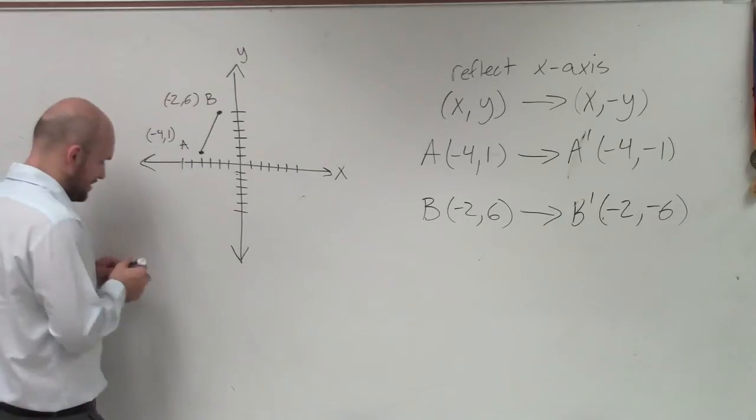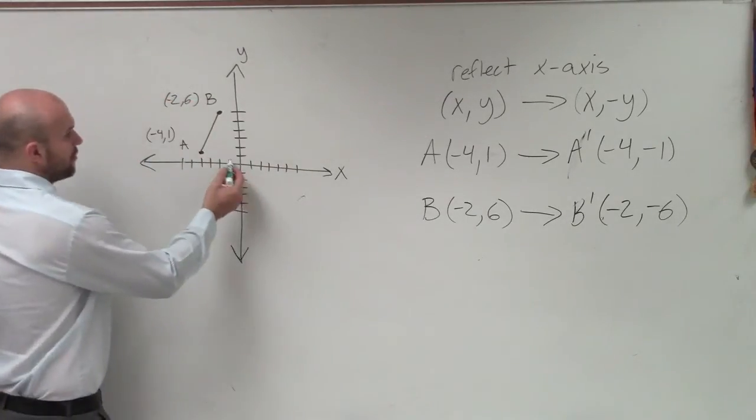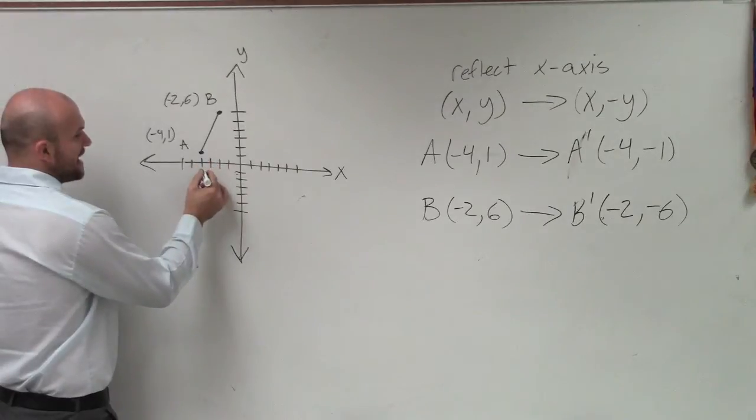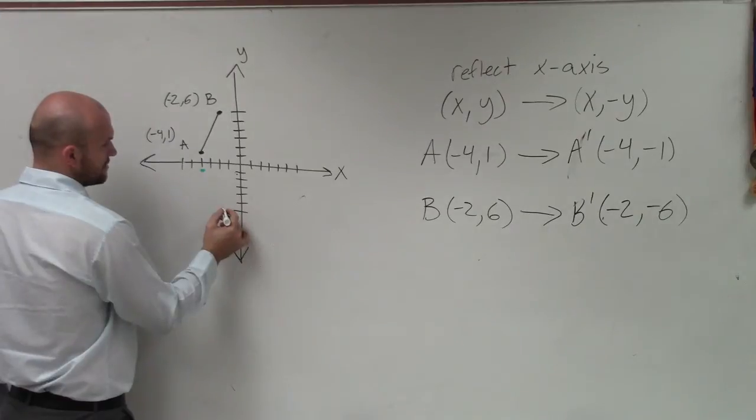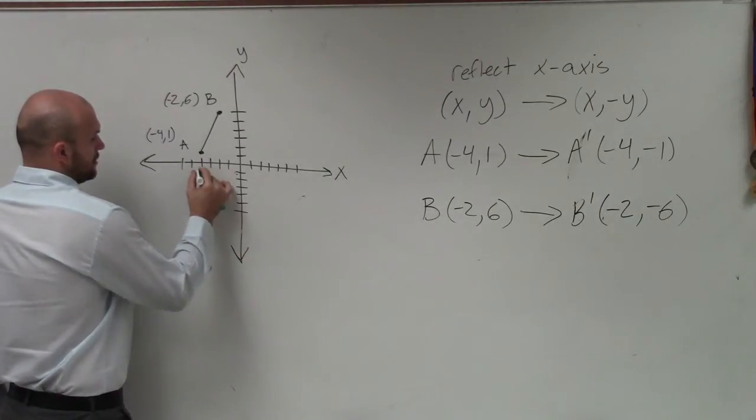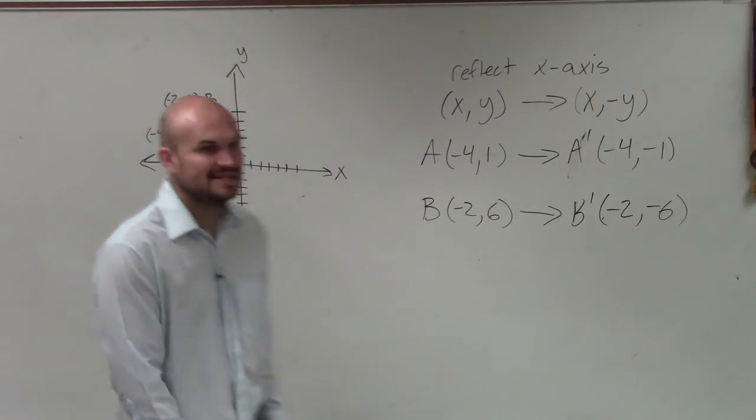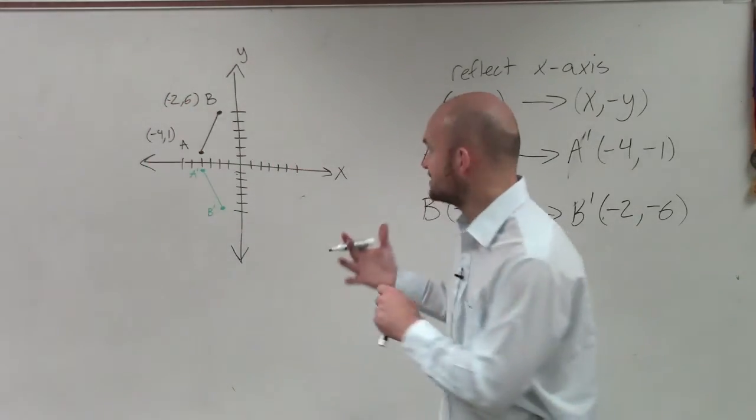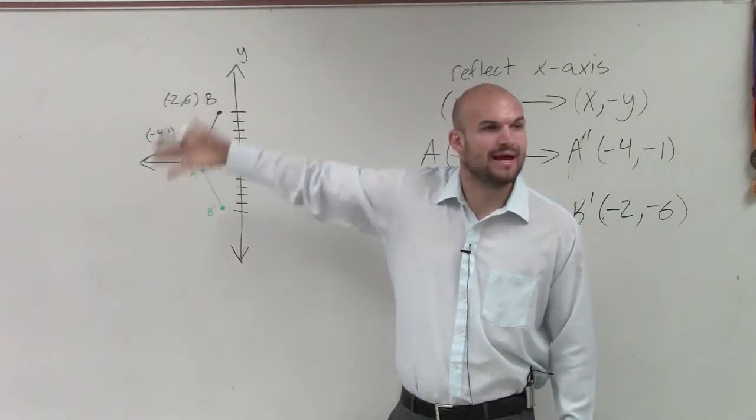So let's go and graph them now. And I'll graph them in a different color. So now, I'm at negative 4, 1. So negative 4, down negative 1. And then, I'm at negative 2, negative 6. So do you guys see how that looks like it's a reflection over the x-axis? See how the x-axis is what mirrors below and above?